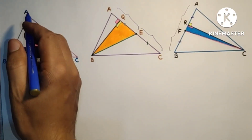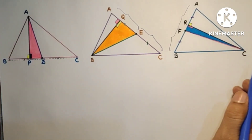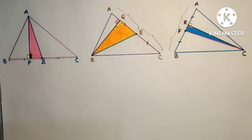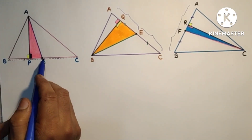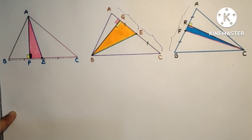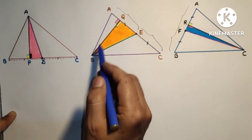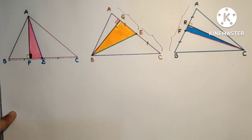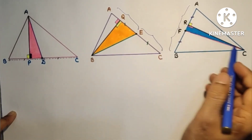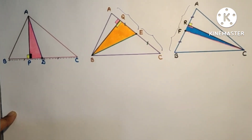The triangle is ABC, where median is AD, median is BE, and median is CF. D is the midpoint. For median AD, there are 3 right-angled triangles: APB, APC and APD, so we can use the Pythagorean theorem. Similarly for median BE: BQA, BQC and BQE, and for median CF: CRF, CRA and CRB.